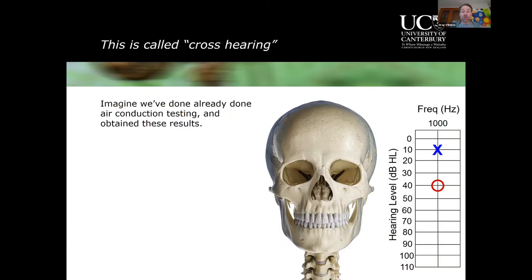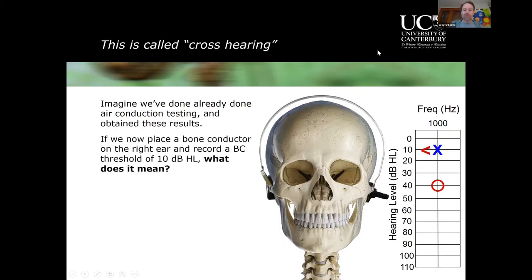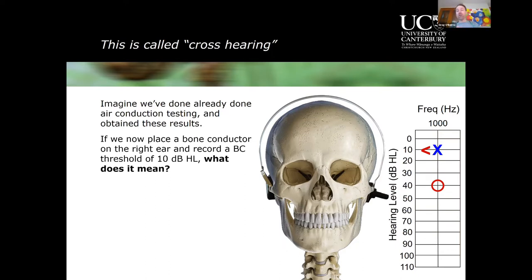We place a bone conductor behind the right ear, present sound, and record a response at 10 dB HL. We write that on our audiogram using the symbol for unmasked bone conduction for the right ear — a bracket. The bracket shape corresponds to what you'd see facing the client with your hand to their right ear. But that symbol indicates a response from the right ear — can we be confident that's what it means?